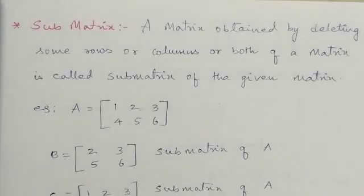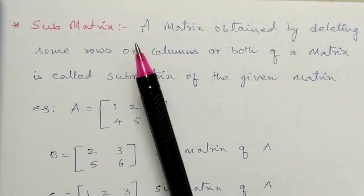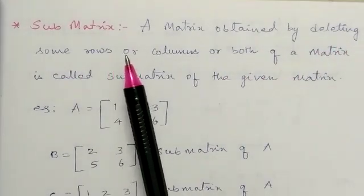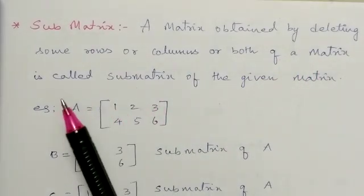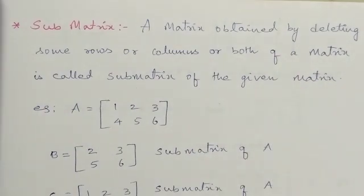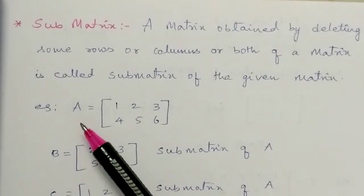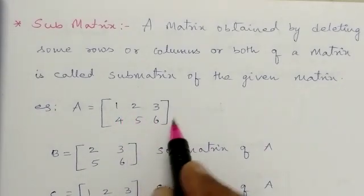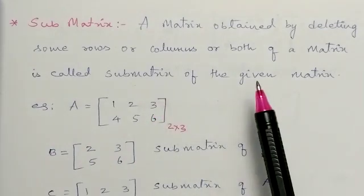Good morning, dear students. Today we will learn the definition of submatrix. A submatrix is a matrix obtained by deleting some rows, or columns, or both from a given matrix. Let us see with an example. There is a matrix A — what is the order of this matrix? Two rows, three columns, so the order is 2 by 3.